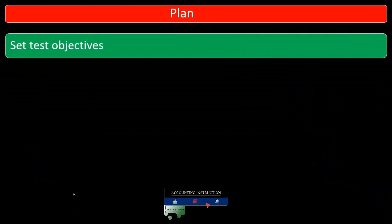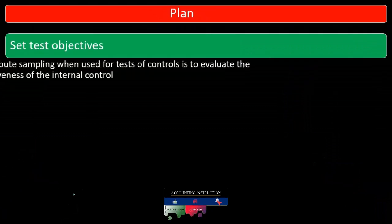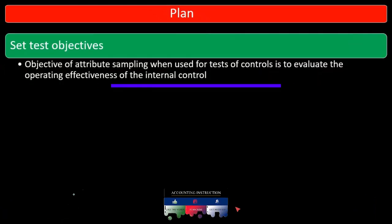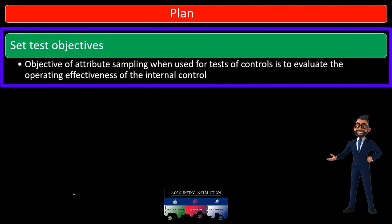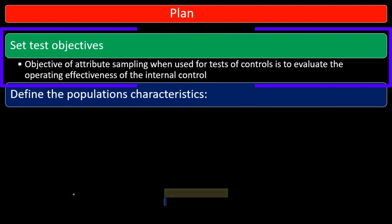Within planning, we will set test objectives. The objective of attribute sampling when used for tests of controls is to evaluate the operating effectiveness of the internal controls.